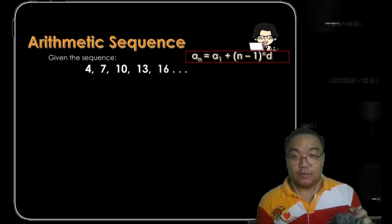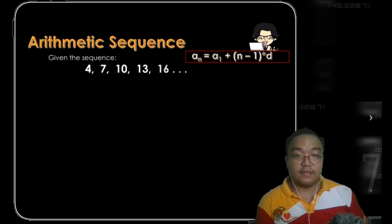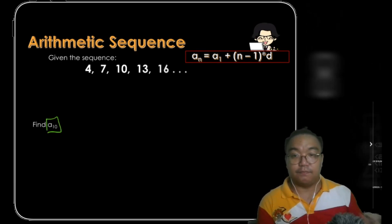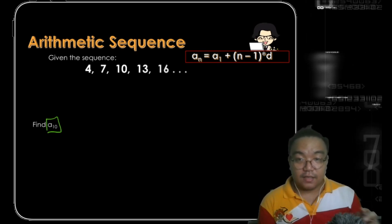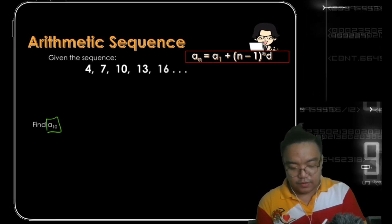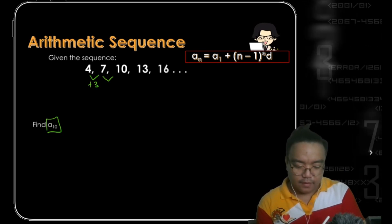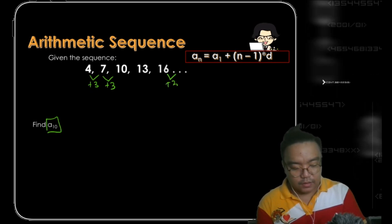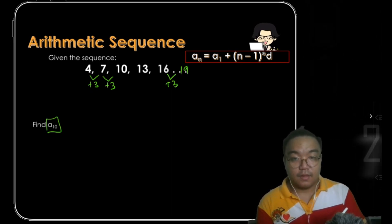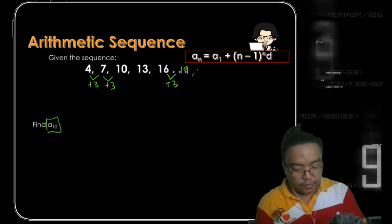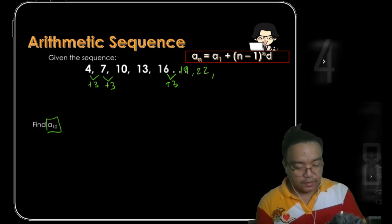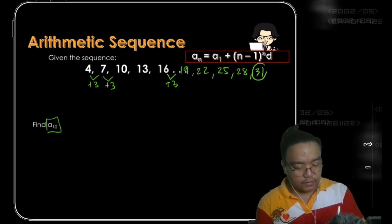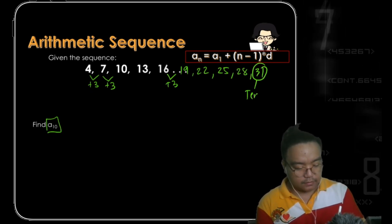Given the sequence 4, 7, 10, 13, 16 — what if we are asked to find a sub 10, the 10th term? Some of us might just follow the pattern: from 16, add 3 to get 19 — that's the 7th term — then 22, 25, 28, and 31. So 31 is our 10th term.